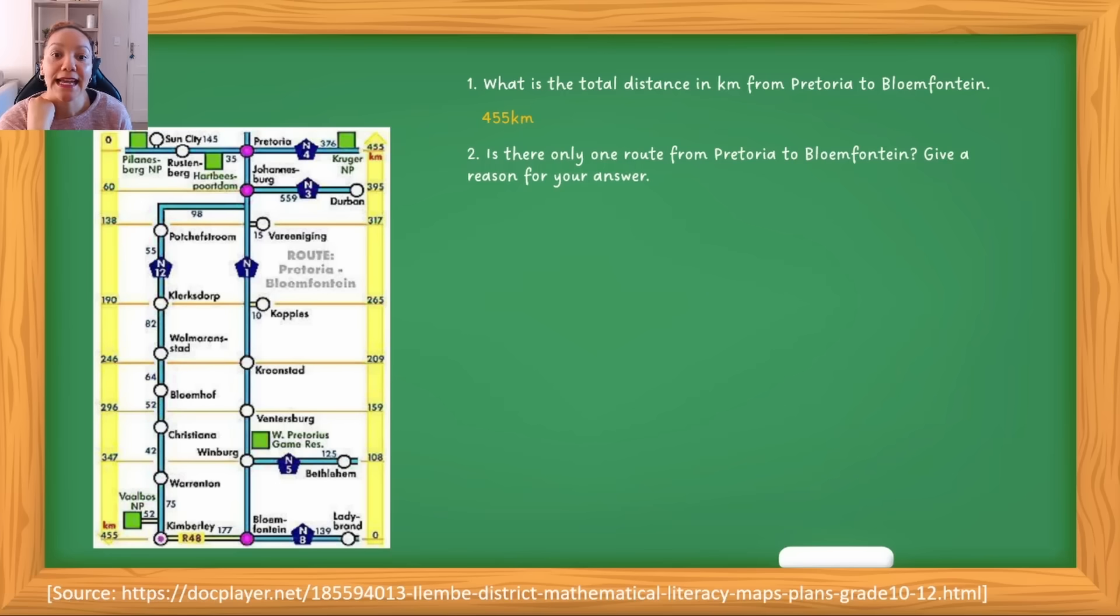Question number two: is there only one route from Pretoria to Bloemfontein? Give a reason for your answer. If I look at this map, I can either go straight down along the N1 from Pretoria to Bloemfontein, or I can take this turn off and go along the N12 and then at Kimberley head onto the R48 to get back to Bloemfontein. So is there one route? The answer is no. The reason is you can travel along the N1, but you can also travel along the N12.